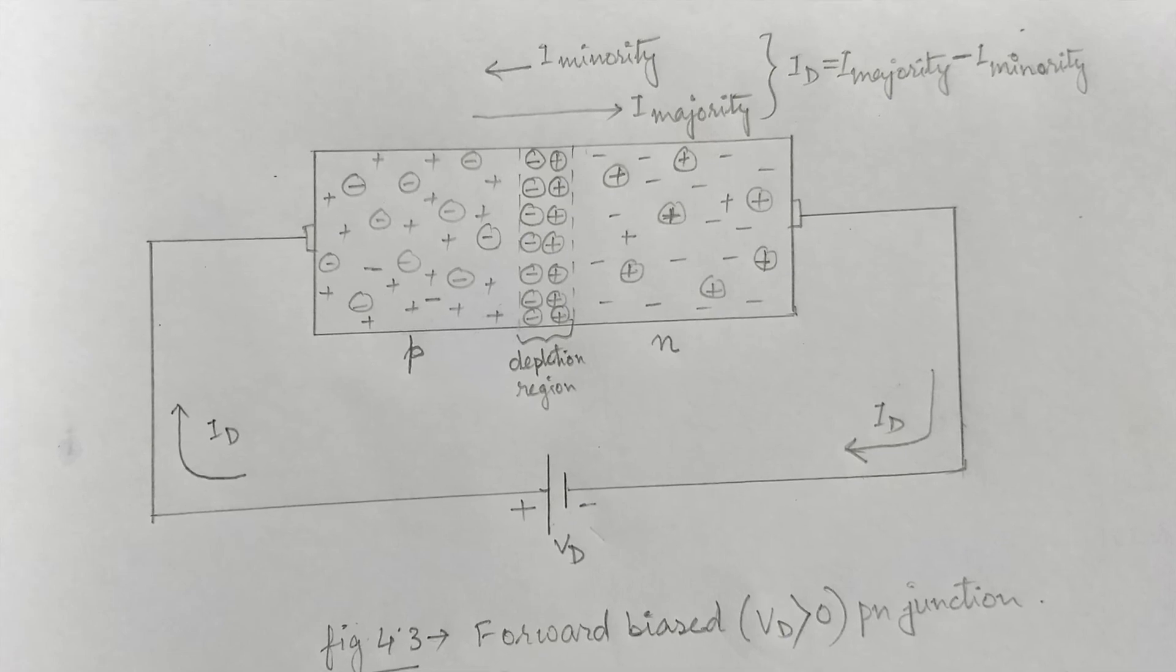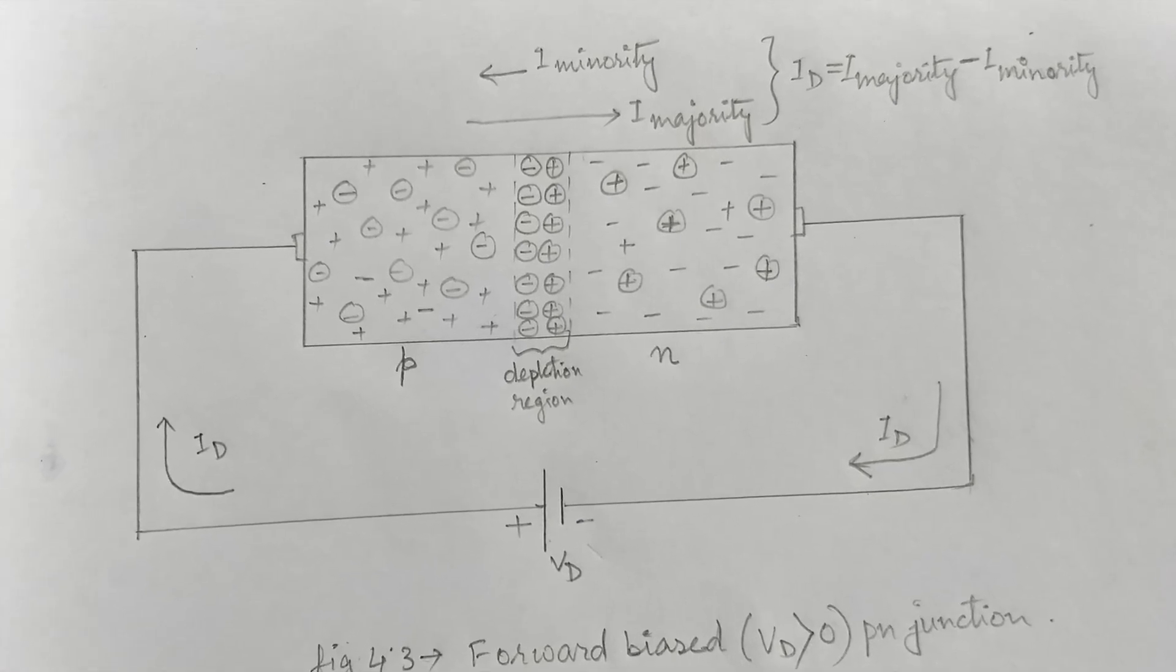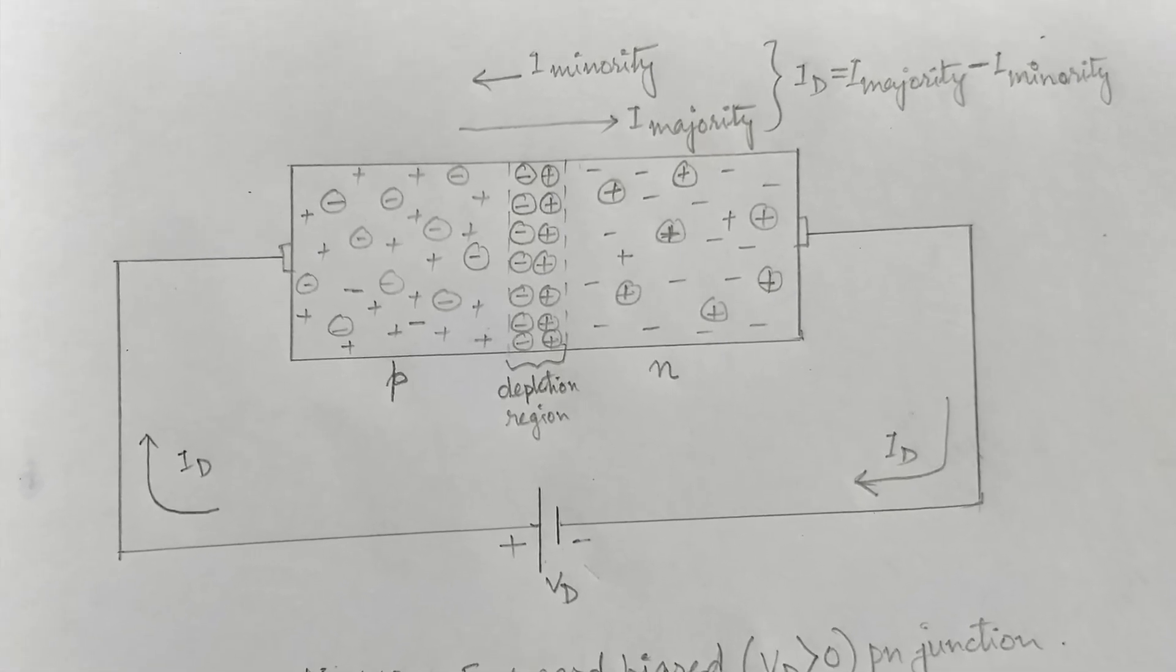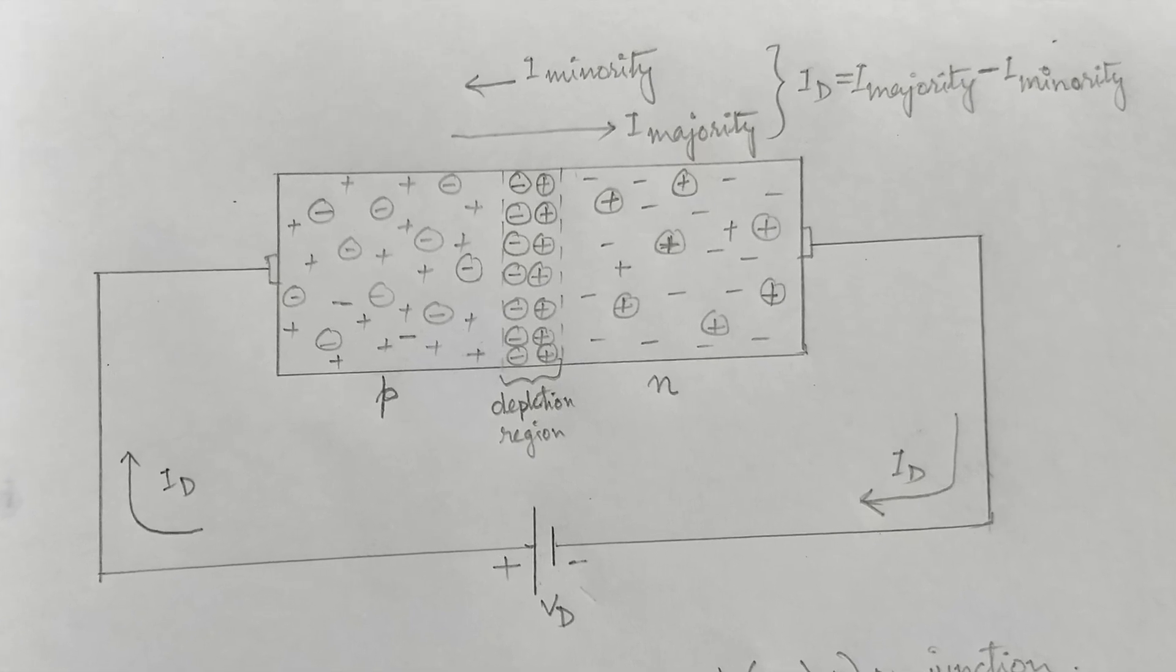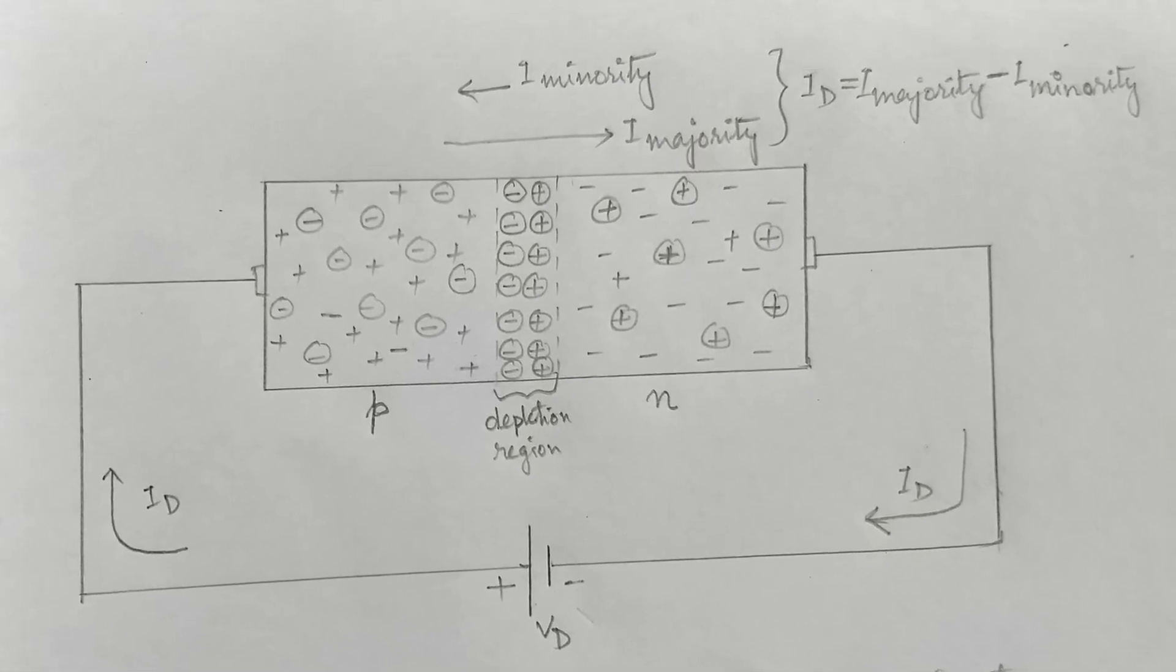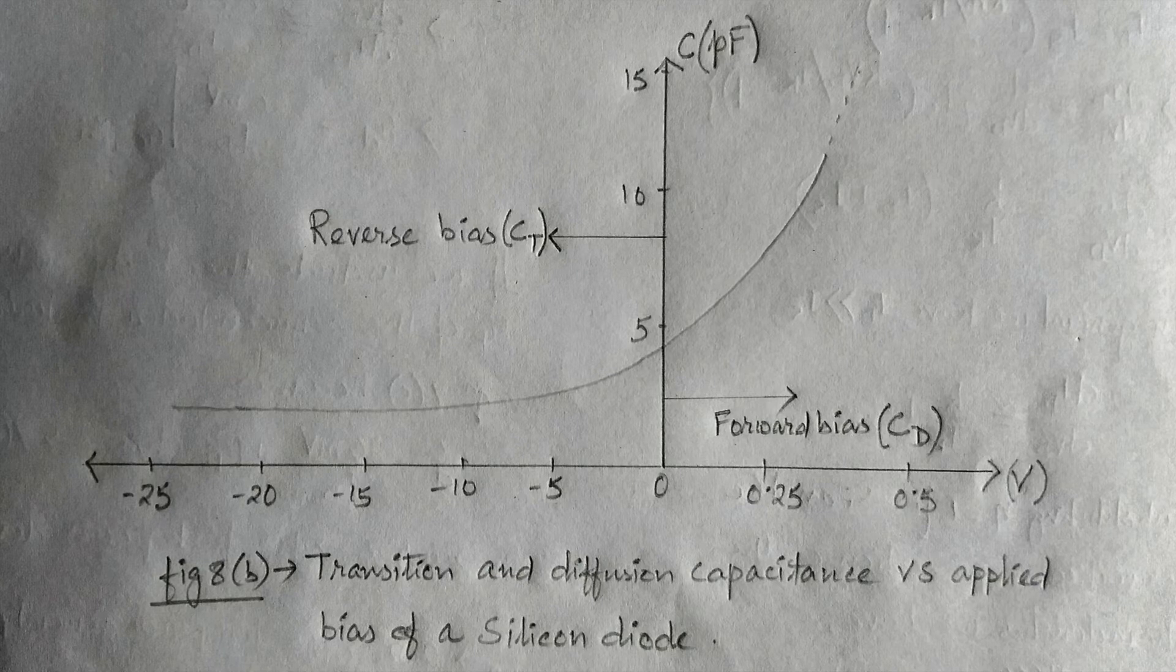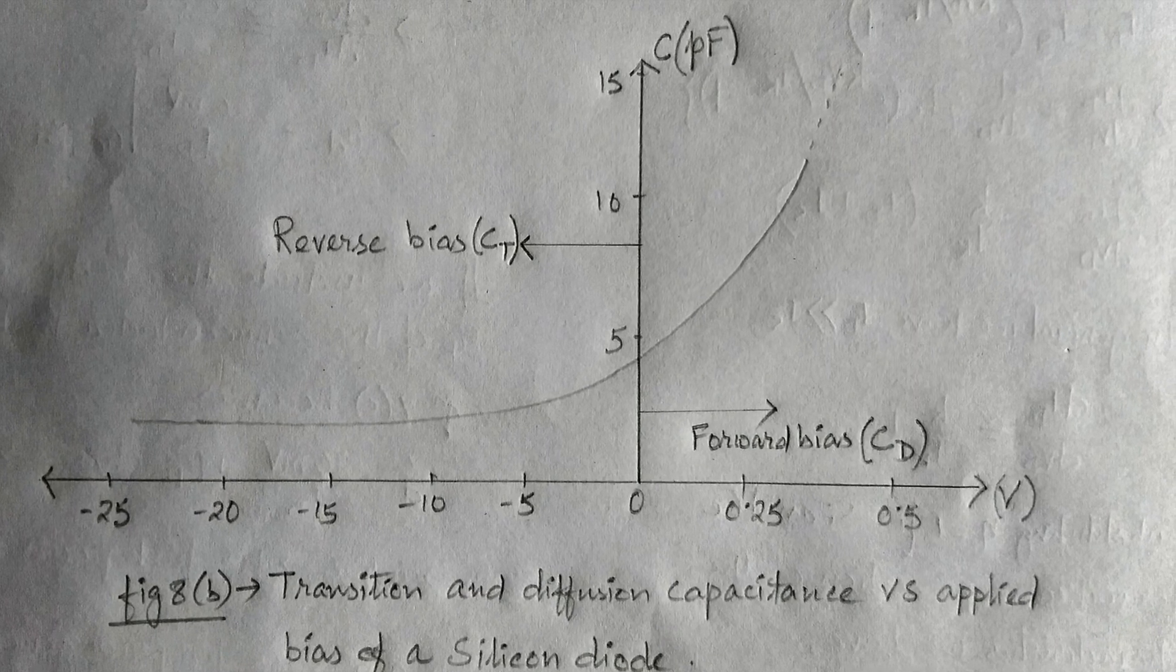Again, for forward bias case, the capacitance effect is directly dependent on the rate at which the charges are injected into the region just outside the depletion region. This will result in increase in diffusion capacitance.